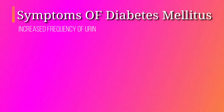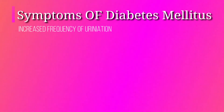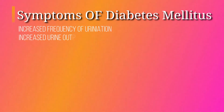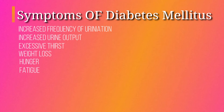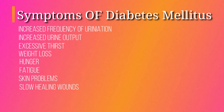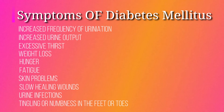How do you know if you have diabetes? Do you have any of the following symptoms: increased frequency of urination, increased urine output, excessive thirst, unexplained weight loss, hunger, fatigue, skin rashes and skin problems, slow healing wounds, frequent urine infections, or tingling or numbness in the feet or toes?